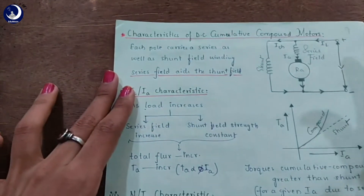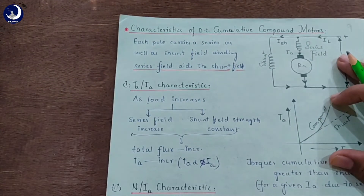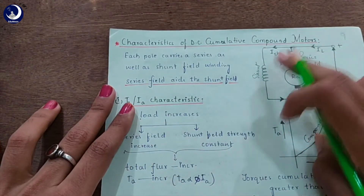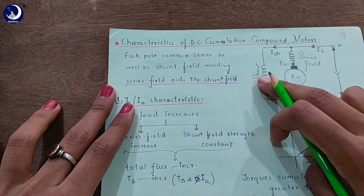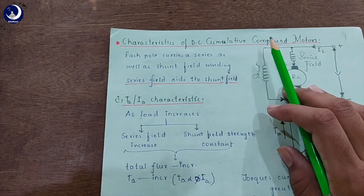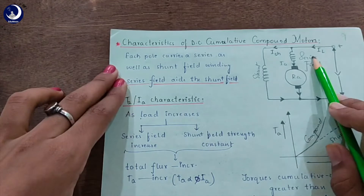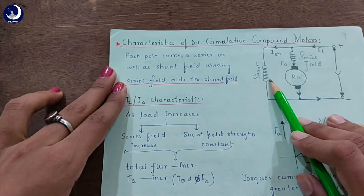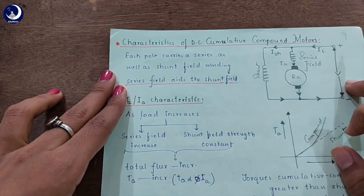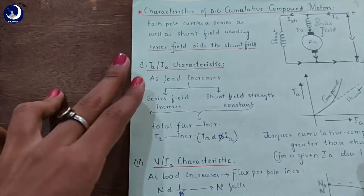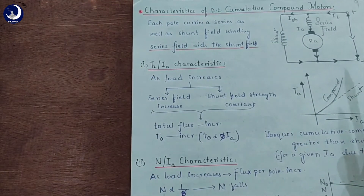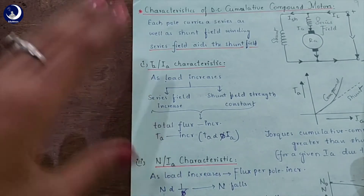In DC cumulative compound motors, each pole carries a series as well as a shunt field winding. In simpler words, the series field aids the shunt field. This is the DC cumulative compound motor connection. Coming to our first characteristic, it is the armature torque and the armature current characteristic.